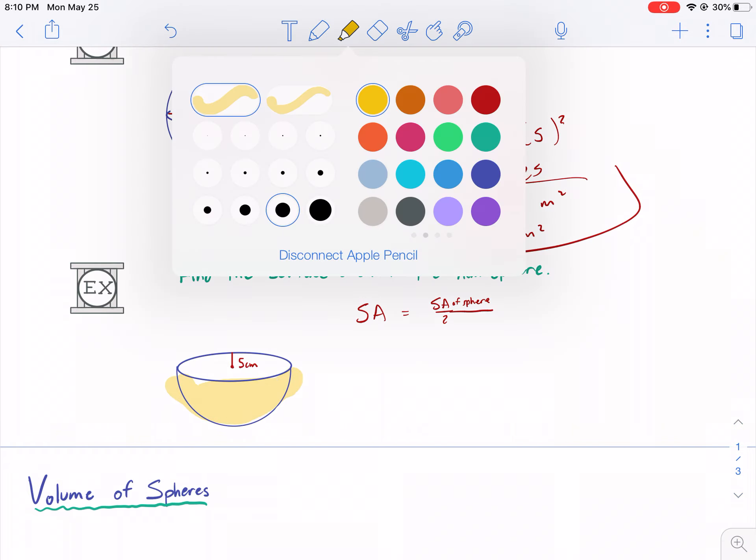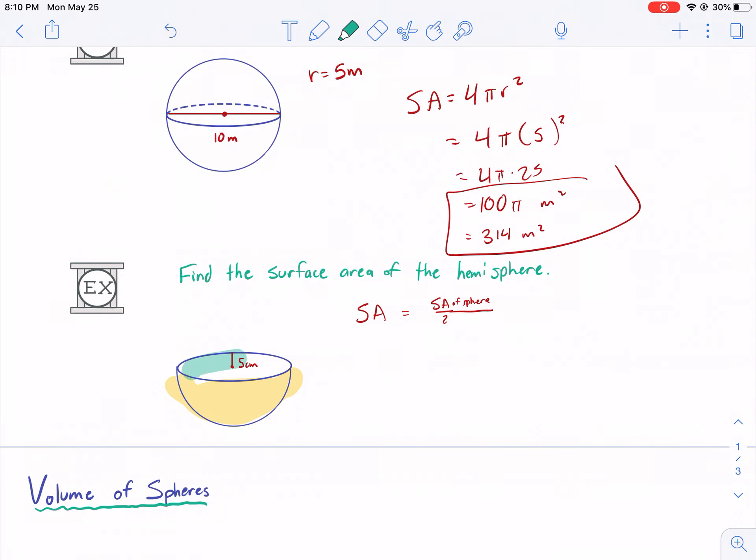So we would need to also include this newly created inside portion, which would be the area of a circle, pi r squared. So we're going to do the surface area of a sphere divided by two plus pi r squared. Surface area of the sphere is four pi r squared divided by two, and then we're going to add pi r squared.